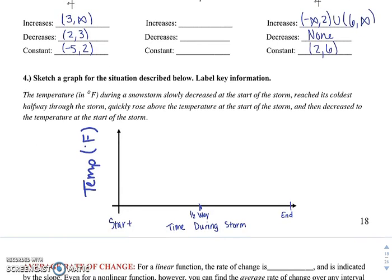We can also sketch a graph if we're being described a situation. It says the temperature in Fahrenheit during a snowstorm slowly decreased at the start of the storm, reached its coldest halfway through the storm, quickly rose above the temperature at the start of the storm, and then decreased to the temperature at the start of the storm.